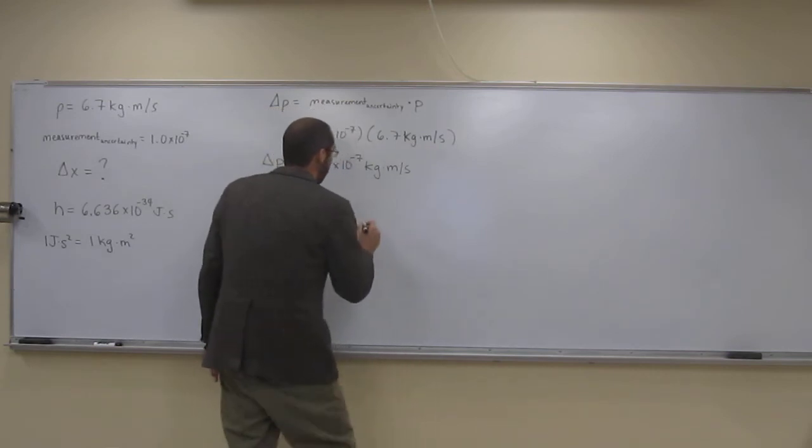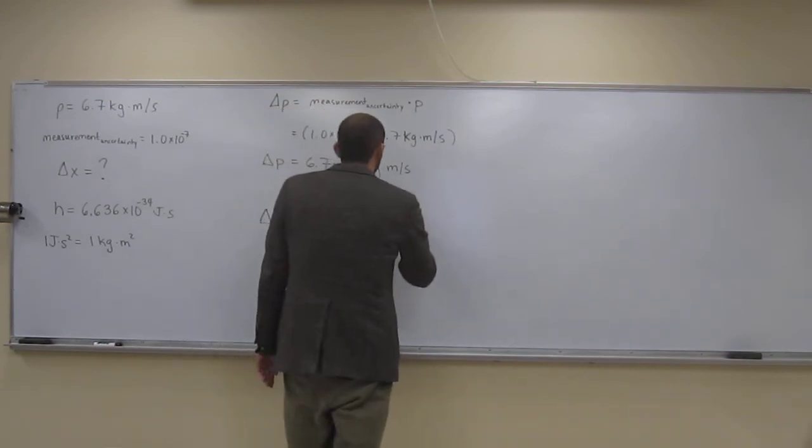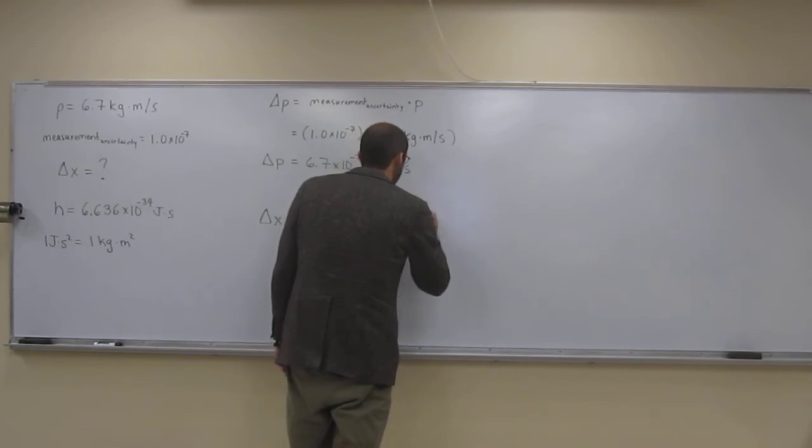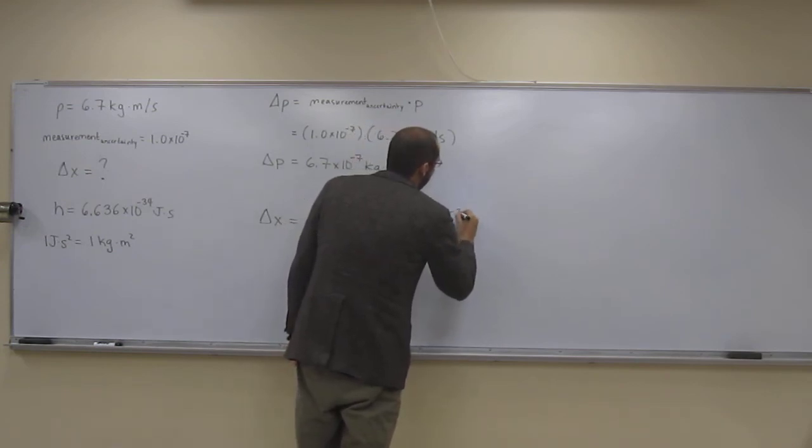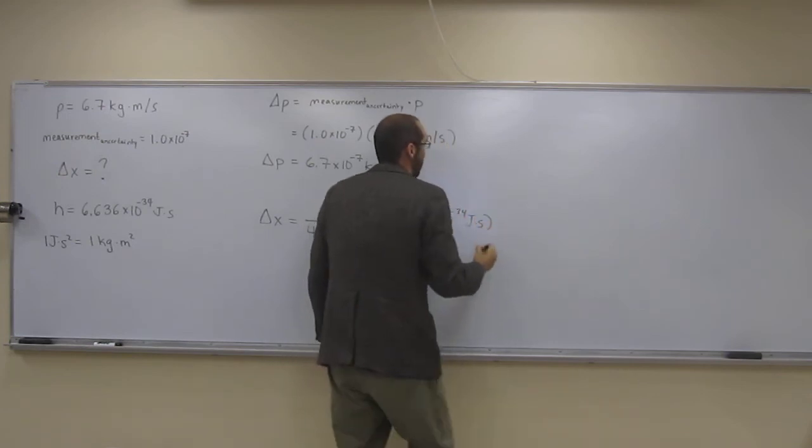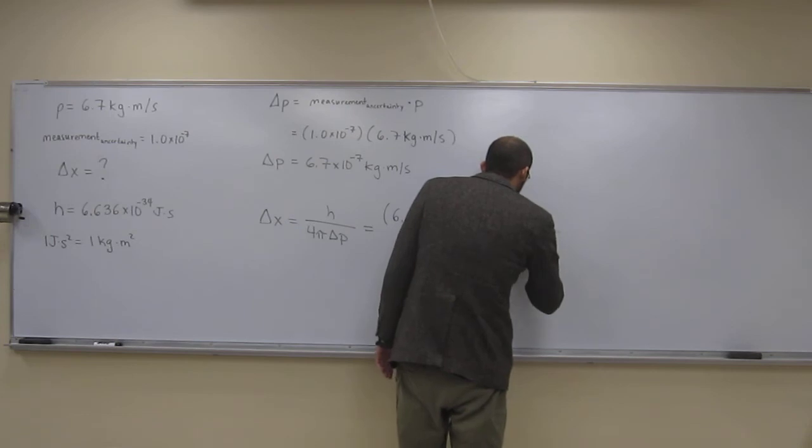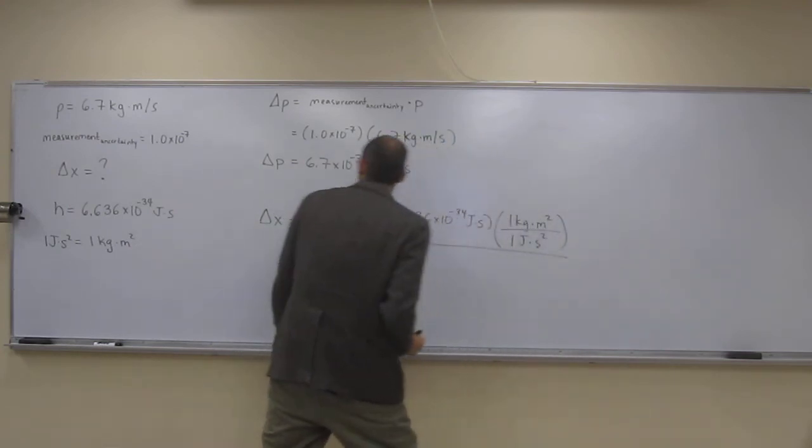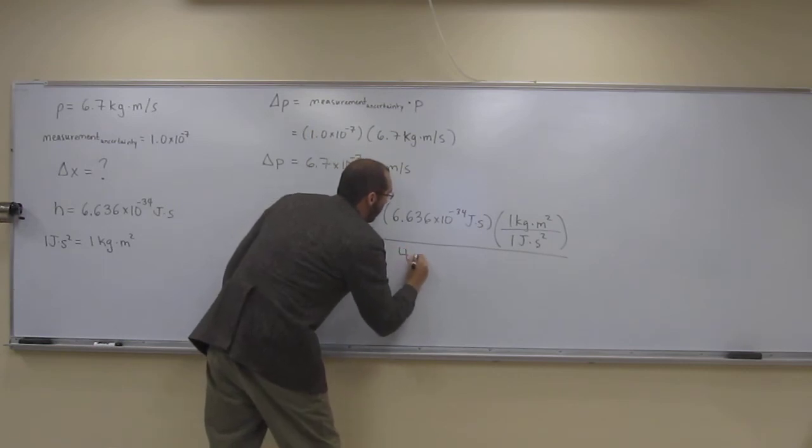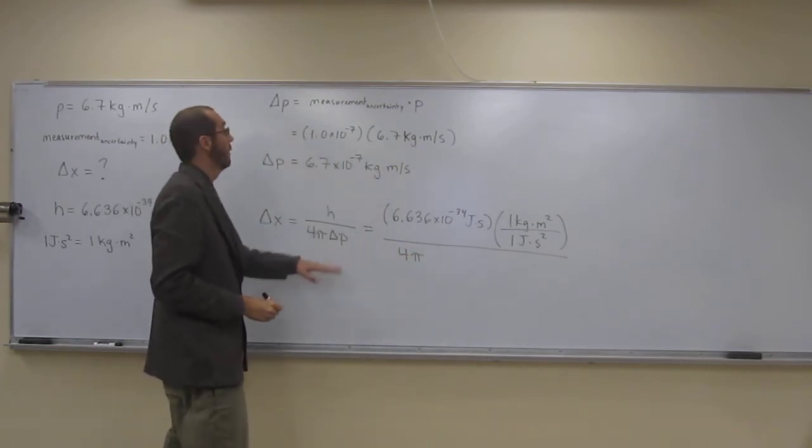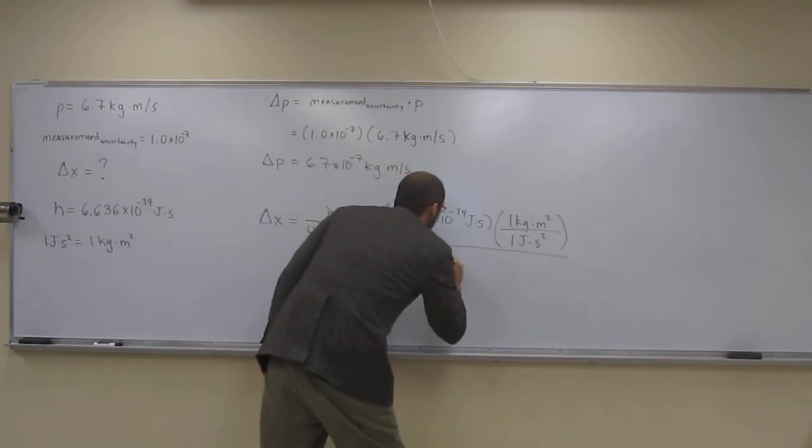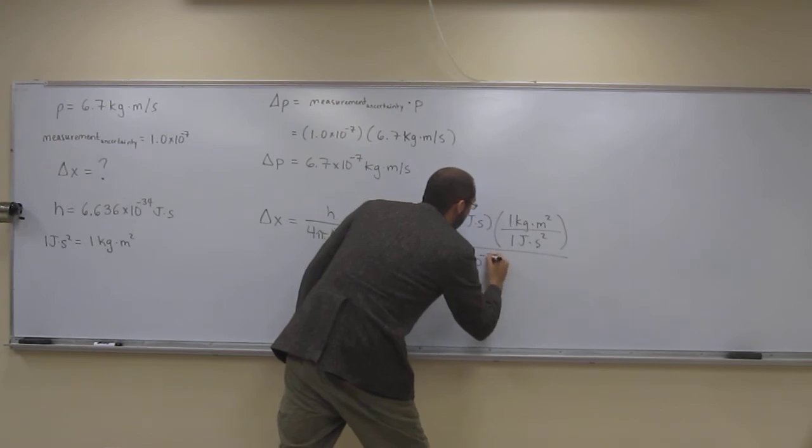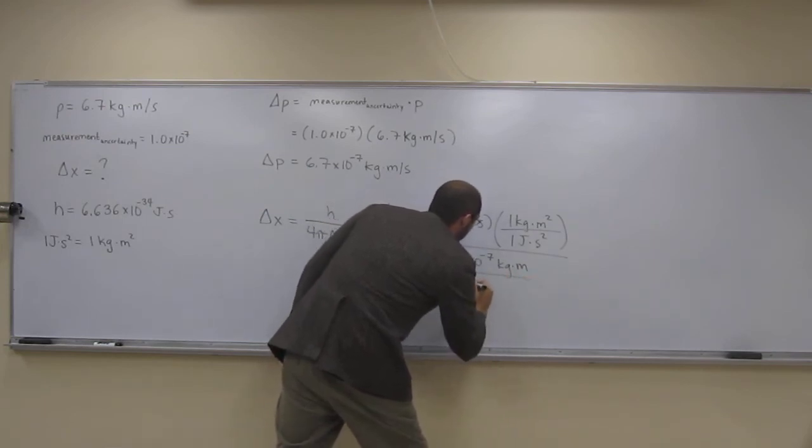So we'll figure out what's the minimum uncertainty in the position. 6.636 times 10 to the negative 34 joule seconds. We're going to do our conversion: joule second squared over one kilogram meter squared. Divide that by 4 pi and then the uncertainty in momentum, 6.7 times 10 to the negative 7 kilogram meters per second.